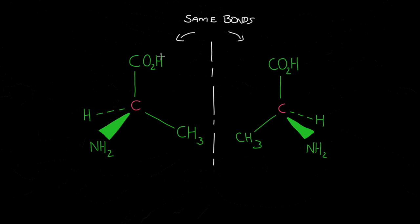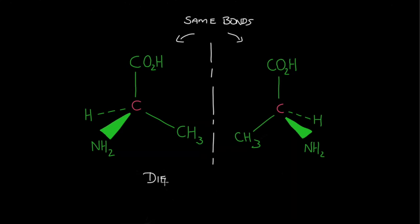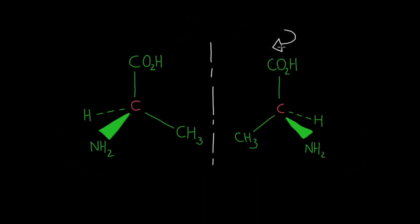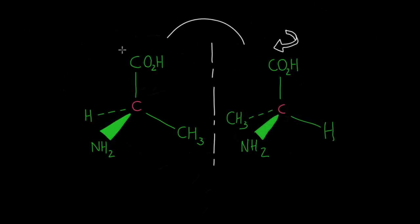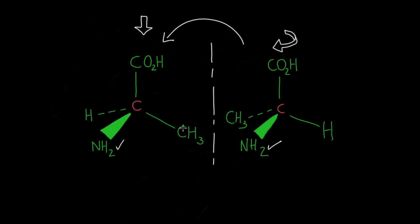However, the molecule on the right is different to the molecule on the left, as it cannot be superimposed. If I attempt to rotate the molecule on the right clockwise, so that it matches the 3D orientation of the one on the left, you will see that although I can superimpose the NH2 group, the hydrogen and the CH3 group are out of position. Let's rotate it back to the original format.